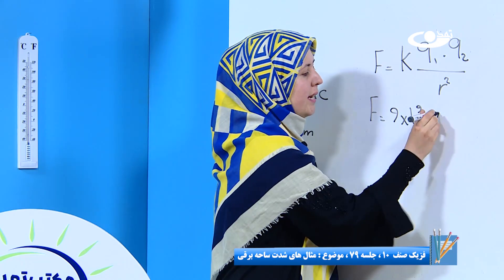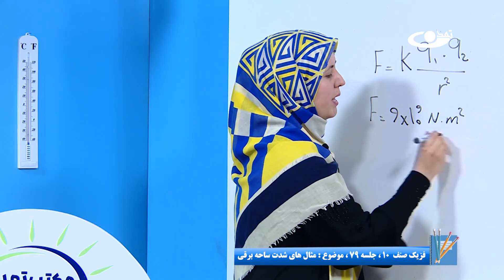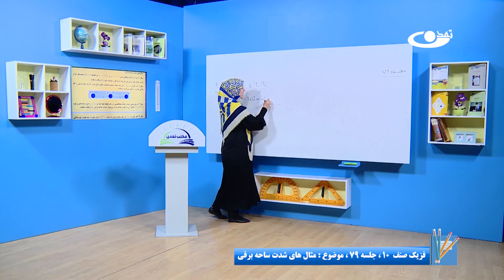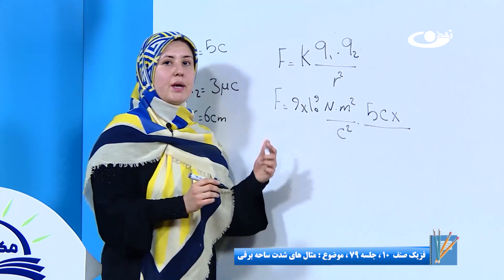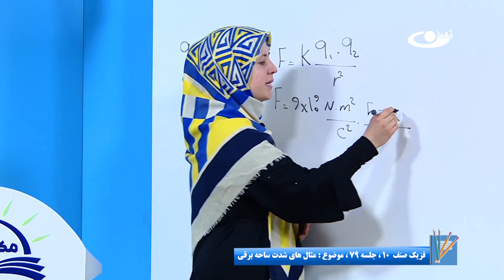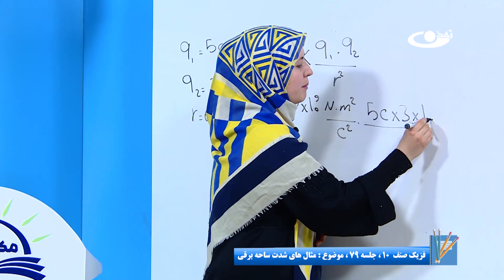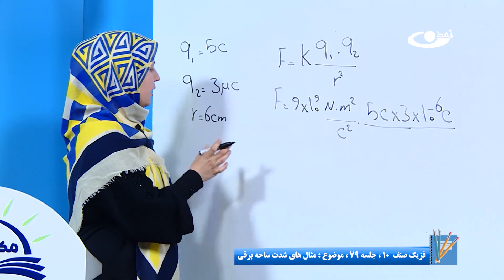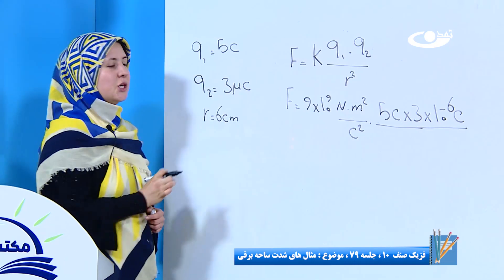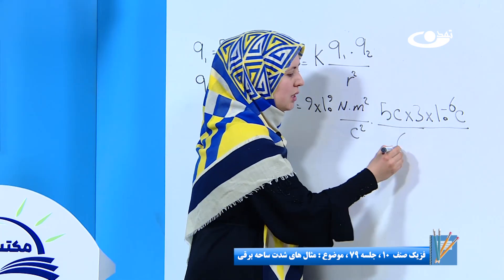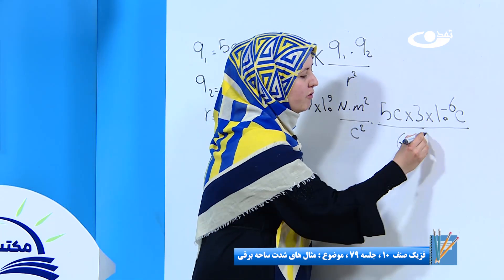نیوتن در متر مربع بر کولمب مربع، ضرب مقادیر Q1 و Q2 را در رابطه وارد می‌کنیم. مقدار Q1 هست پنج کولمب، ضرب مقدار Q2 سه میکرو کولمب. ما باید میکرو را به کولمب تبدیل کنیم، پس نوشته می‌کنیم ۳ ضرب ۱۰ به توان منفی ۶ کولمب. بر روی R مربع، مقدار R هست ۶ سانتیمتر، باید به متر تبدیل کنیم، پس می‌شه ۶ ضرب ۱۰ به توان منفی ۲ متر.